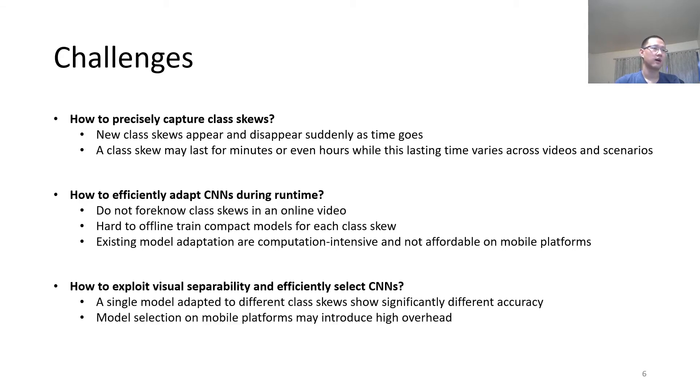The third challenge is how to extract visual separability and efficiently select CNNs. A single model adapted to different class skews show significantly different accuracy. Also, model selection on mobile platforms may introduce high overhead.